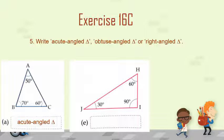Now let's come to the next figure. In this figure there is triangle HIJ where angle H is equal to 60 degrees, angle I is equal to 90 degrees, and angle J is equal to 30 degrees. In this triangle, one angle is equal to 90 degrees and the rest of the two angles are less than 90 degrees, meaning they are acute angles. Such a triangle in which one angle is equal to 90 degrees is called a right angle triangle, so we write right angle triangle in the box.